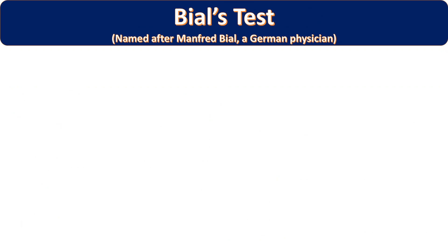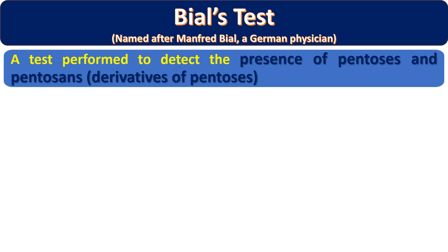Bial's test is a test which we normally perform for pentose sugar identification and detection. This test was named after a scientist named Manfred Bial, who was a German physician. With his name this test was named as Bial's test, and it is performed to detect the presence of pentose and pentosans.